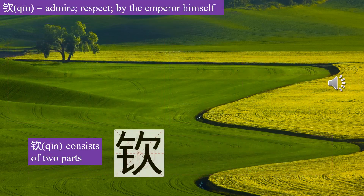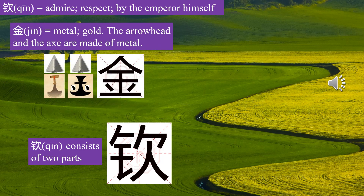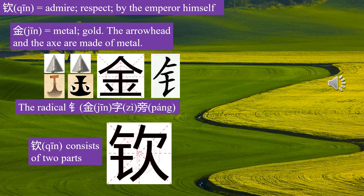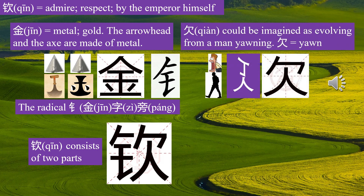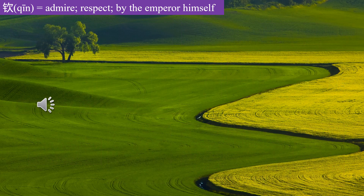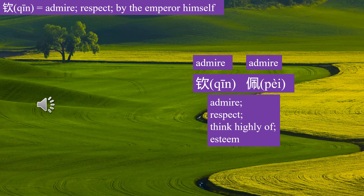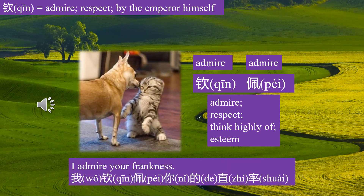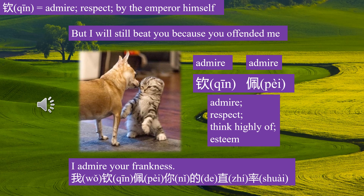Character Qin consists of two parts. Jin means metal; the radical Jin zi pang means metal. Jin could be imagined as evolving from a man yawning — Jin means yawn. A story of Qin: the emperor's words, even uttered while he yawned, were golden. Subjects admired him extremely. Qin means admire, by the emperor himself. Qin pei means admire. I admire your frankness — 我钦佩你的直率. But I will still beat you because you offended me.